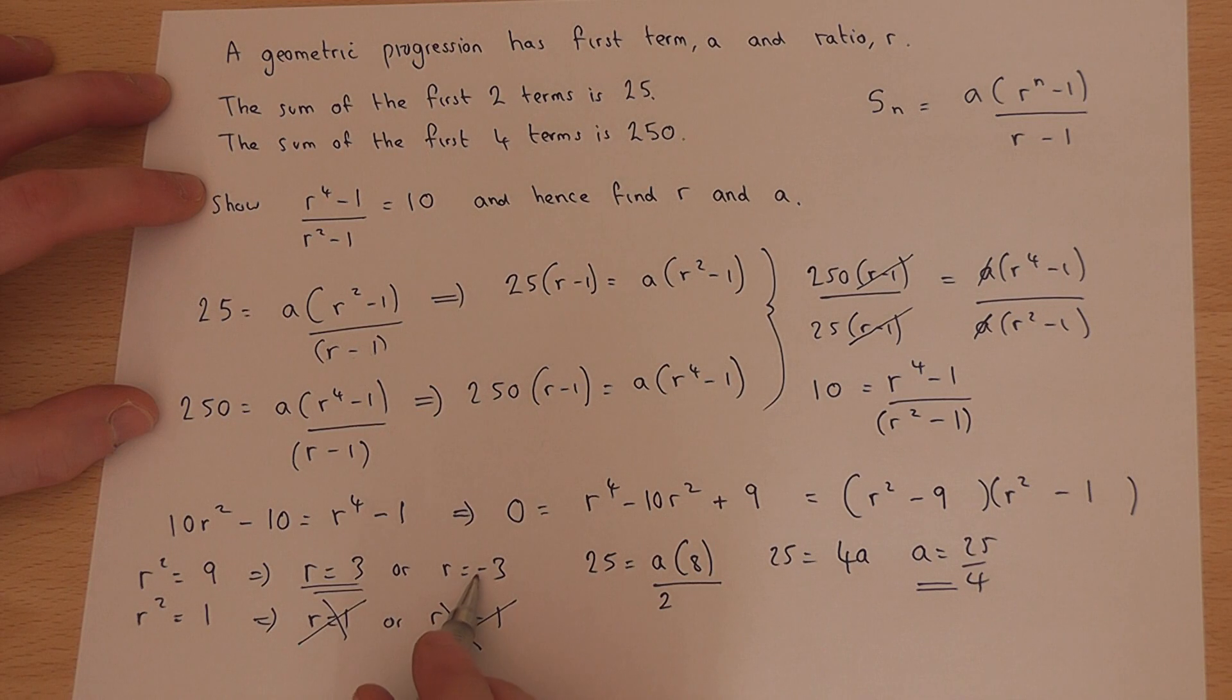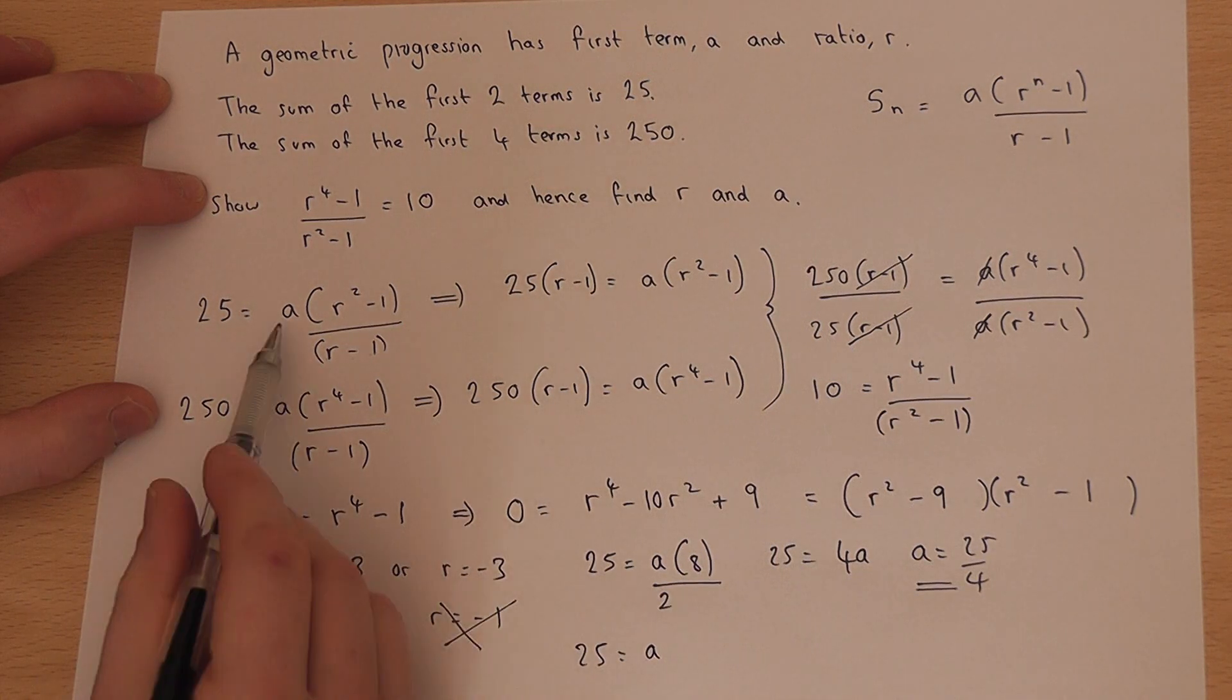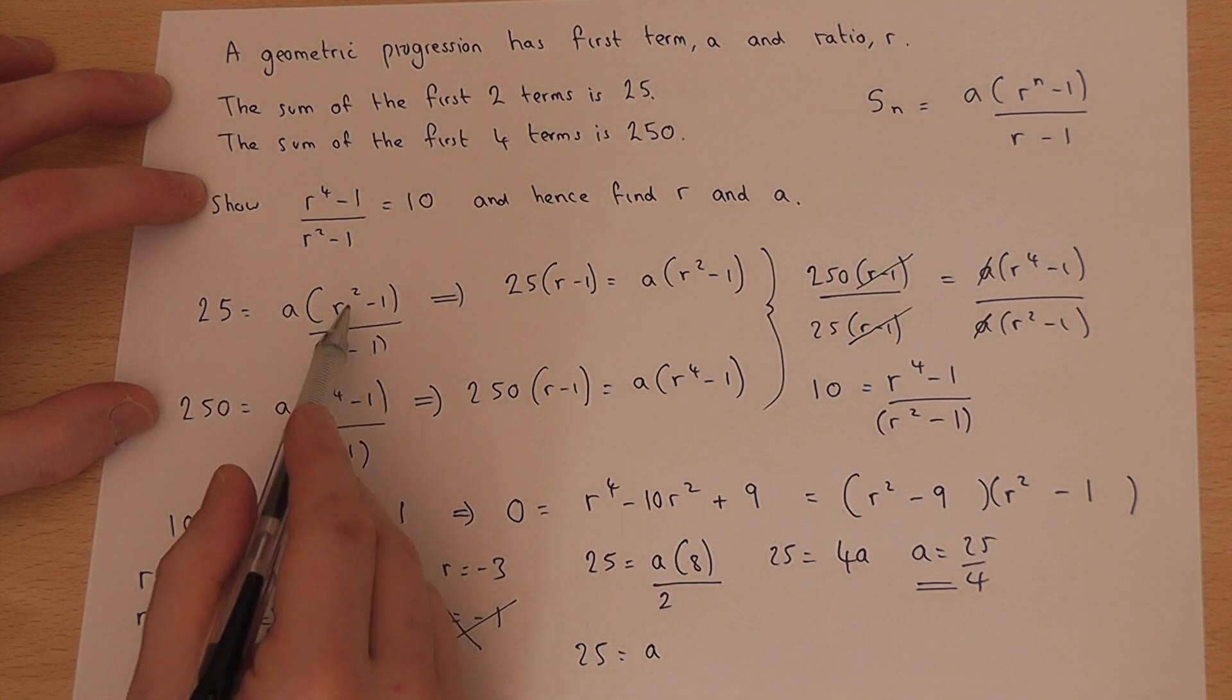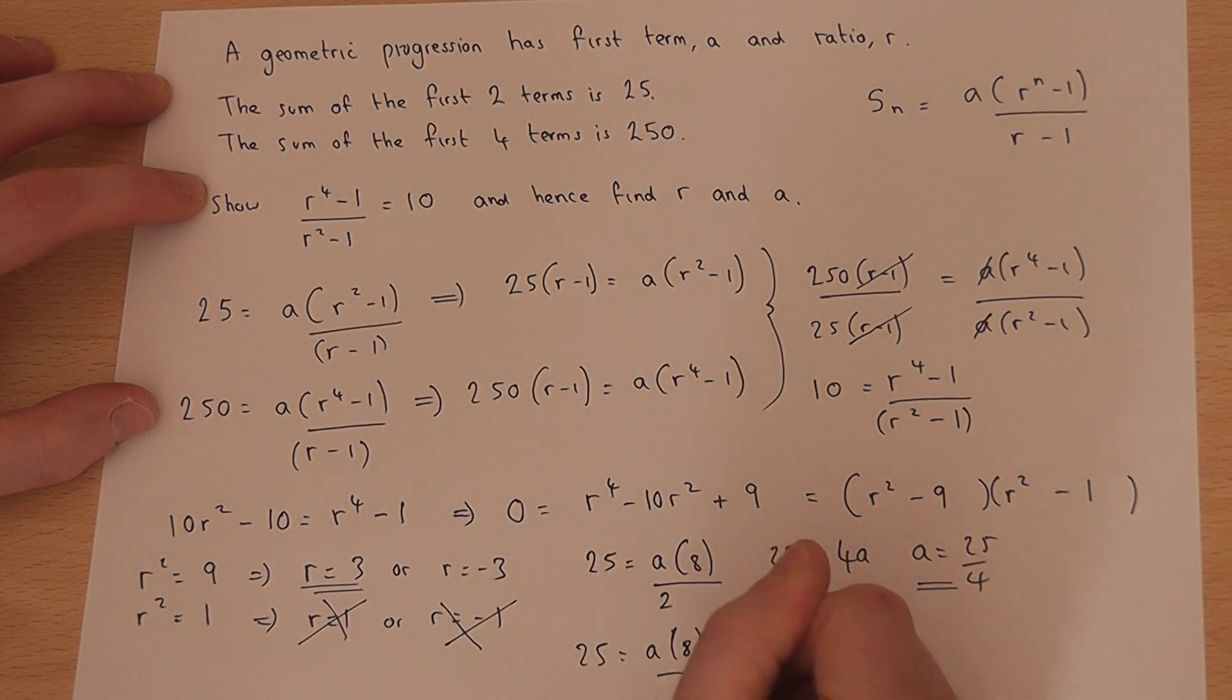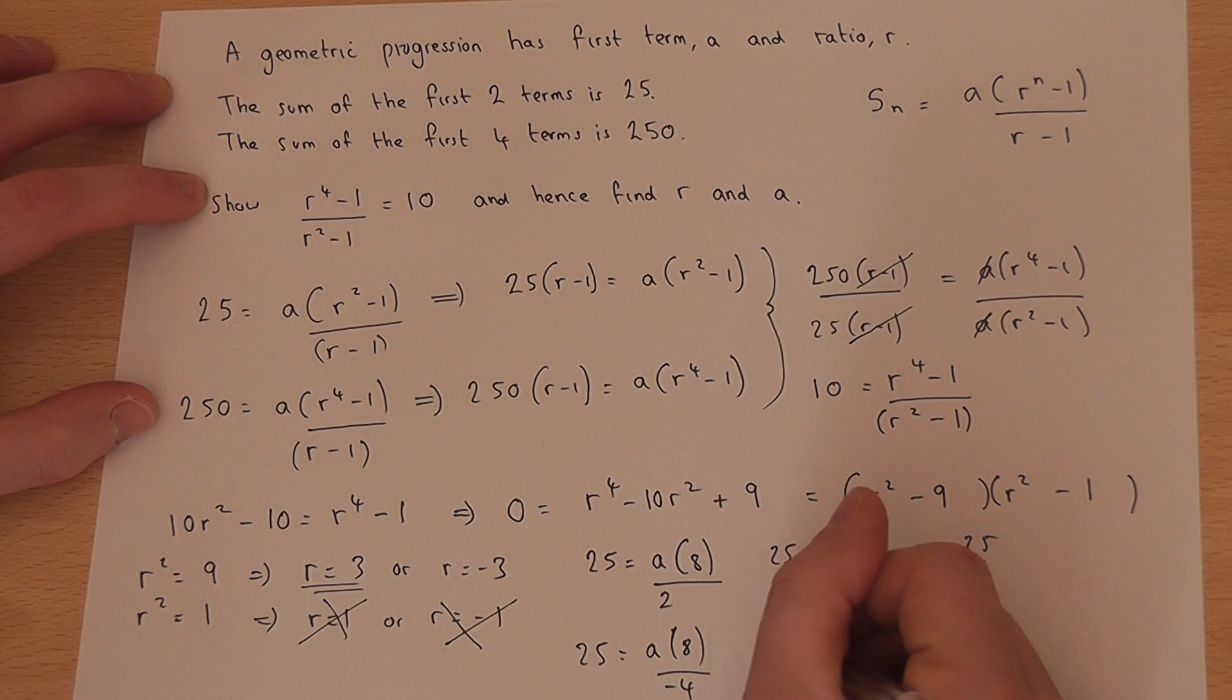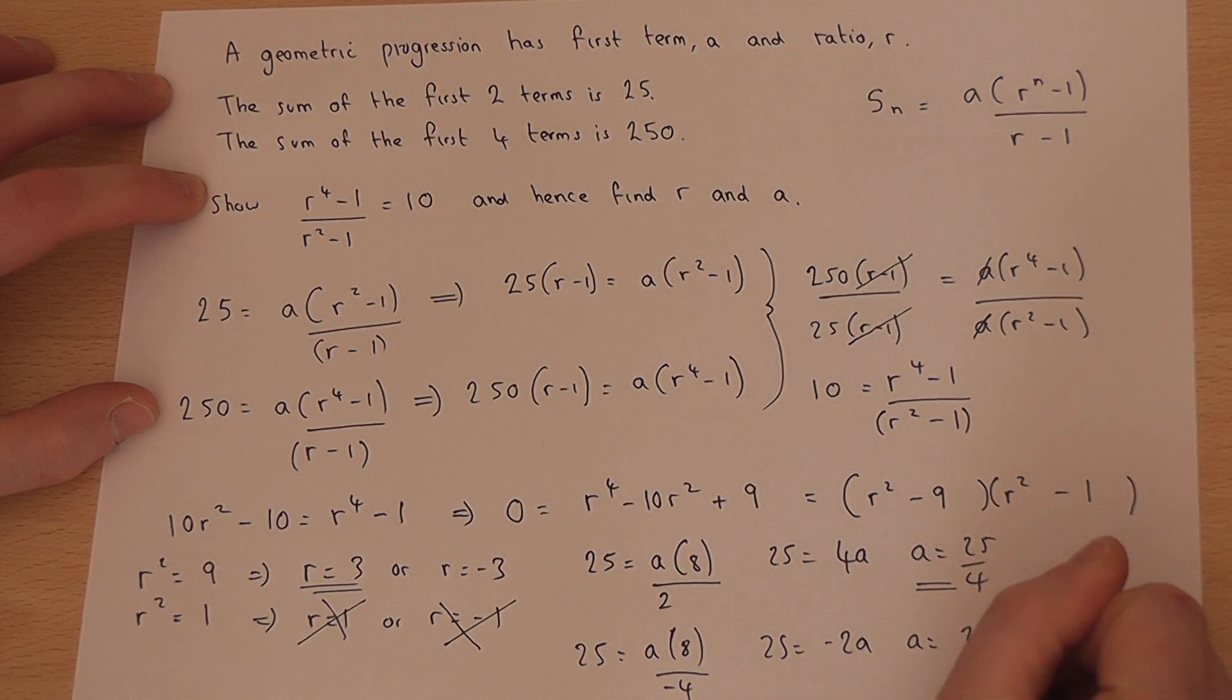When r is minus 3, 25 equals, again back to that first equation, a(9 - 1)/(−3 - 1). So 25 equals -2a, so a equals 25 over minus 2.